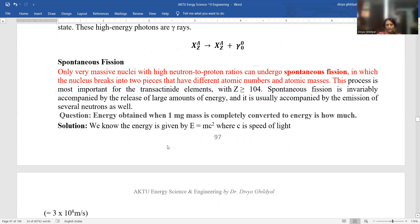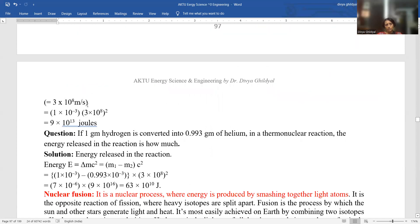Let us attempt a numerical. Numericals are asked on fission and fusion. Energy obtained when 1 milligram mass is completely converted to energy. We know from Einstein's mass energy equation that E is equal to mc square, where c is speed of light. We have been given mass as 1 milligram. We will convert this into kg. So, 1 into 10 to the power of minus 3 kg into 3 into 10 to the power of 8 whole square.